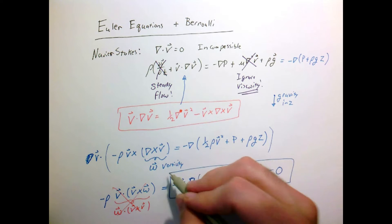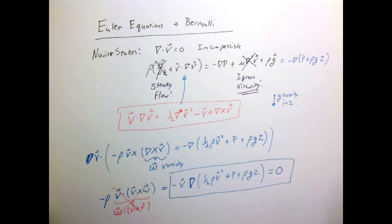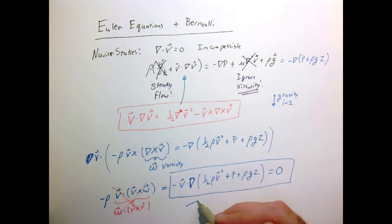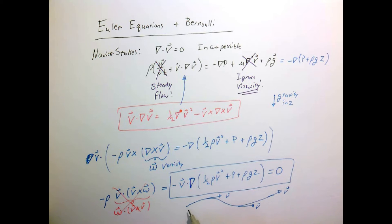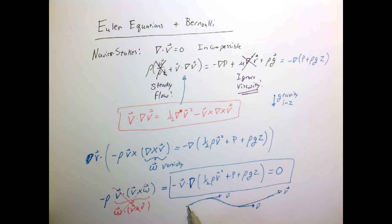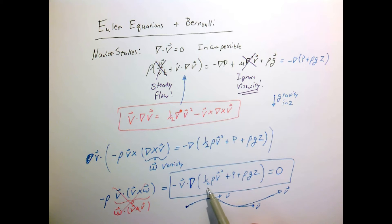So our final relationship is that v dot the gradient of the quantity (one-half rho v-squared plus pressure plus rho*g*z) equals zero. The interpretation is: v dot gradient means that if we follow the flow along a streamline, this expression tells me the change sensed along that streamline in the direction of the flow. For a steady flow, following a streamline is like injecting dye and watching its path. Along that path, the quantity one-half rho v-squared plus p plus rho*g*z is constant.